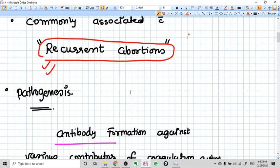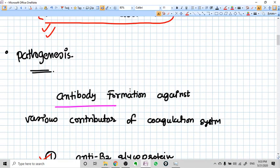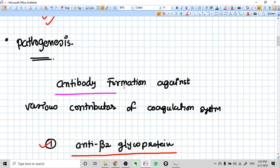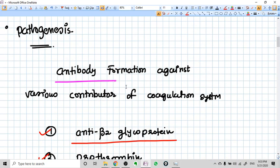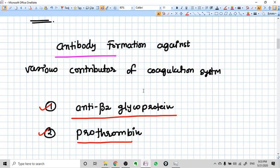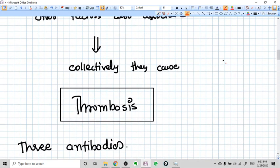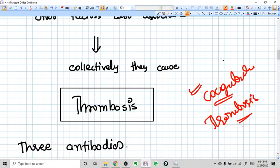Now, let's go for the pathogenesis. The students actually learn the pathogenesis very deeply. They try to learn everything. But don't try to do that. Just learn what you should learn. What happens in APLAS syndrome? There is antibody formation against many molecules of the coagulation system. It is an autoimmune disorder. So, antibodies will be formed against the major molecules of the coagulation system. And because of this problem, the end result what we get is increased coagulability and thrombosis, vascular thrombosis.